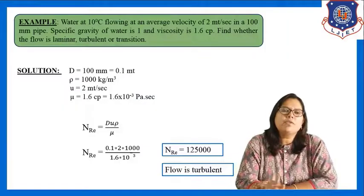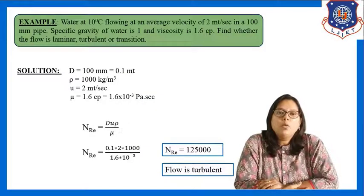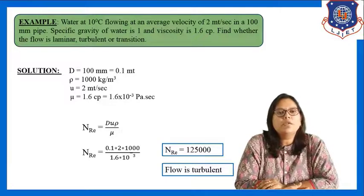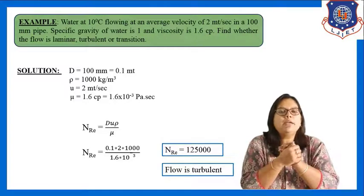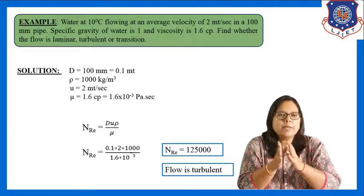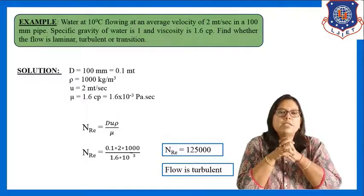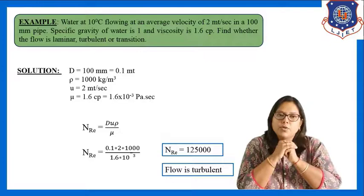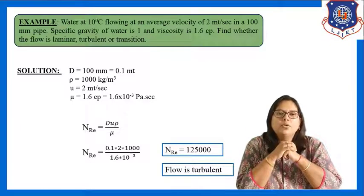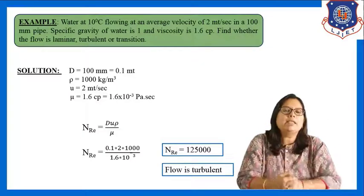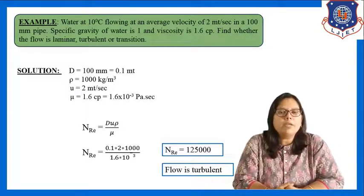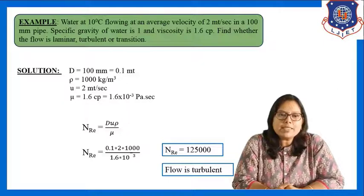In today's session we will see first of all one example based on Reynolds number. We have already studied the Reynolds experiment, and from that we came to know about Reynolds number, which is NRE equals to du·rho divided by mu. With the help of that we can determine the type of flow. So let us start.